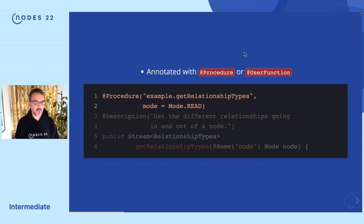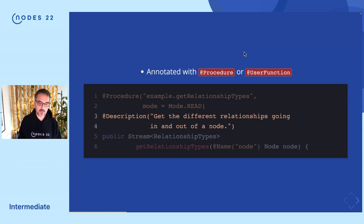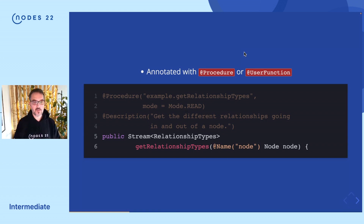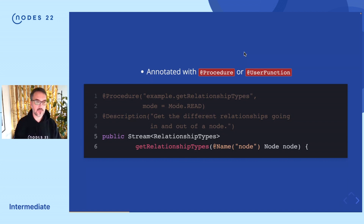You can also provide a description to the end user, so the end user knows what to expect of your procedure. And then you have the actual Java function specification. Procedures always need to return a stream of objects. The objects you return need to be something that the Neo4j Bolt driver can actually handle. You can also specify parameters for your function and annotate them with a name — in this case, the node.